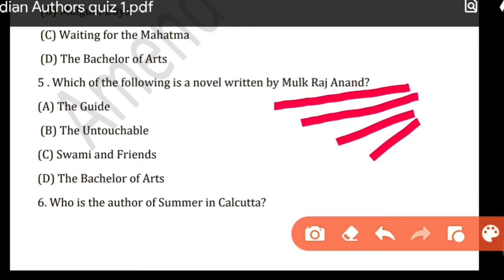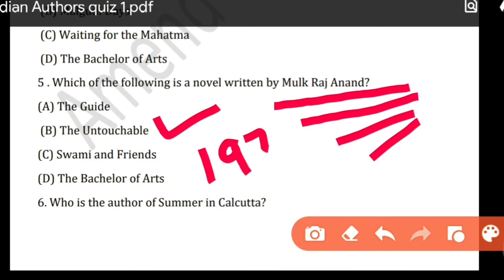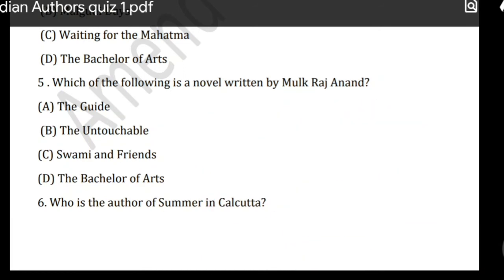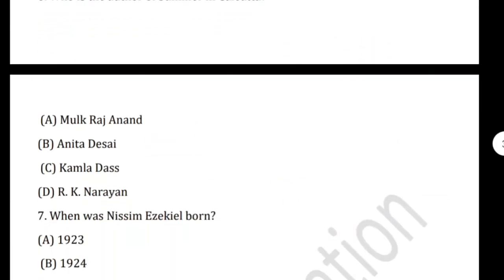Our answer is Mulk Raj Anand's novel 'Untouchable.' 'Untouchable' is a very beautiful novel by Mulk Raj Anand which, as the title suggests, deals with the theme of untouchability. This novel was published in 1935.